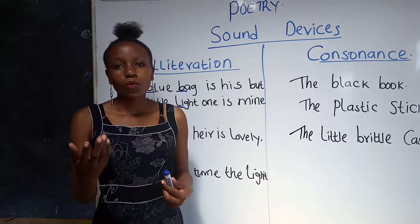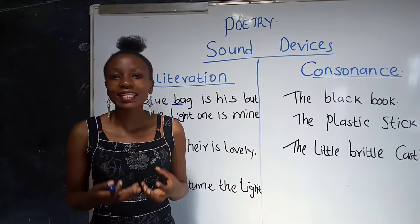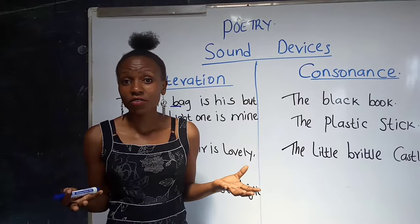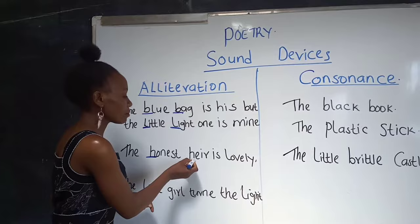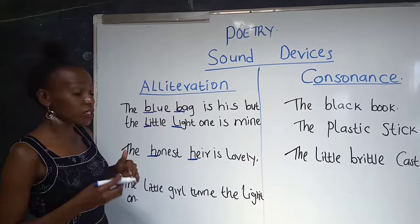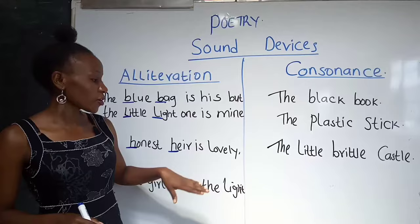One of the reasons why you don't have to focus on the letters but the sound is because some words may have the same initial consonant letter, but the letters do not sound the same. For example, 'the honest air is lovely' — we have the letter H at the beginning of both words, but in reality they don't sound the same. In 'honest,' the H is silent. So we don't have to focus on the letters but the sound. This is not alliteration.